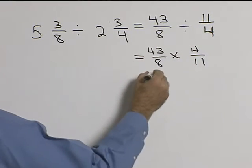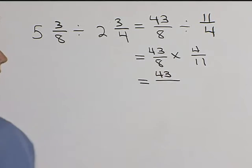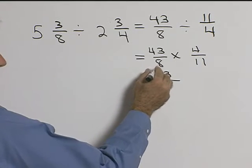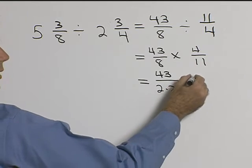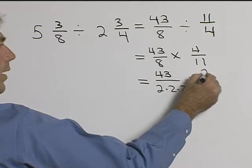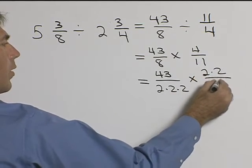And now we're ready to write our factors. Well, forty-three is a factor, one times forty-three. Eight is two times two times two, times four is two times two over eleven.